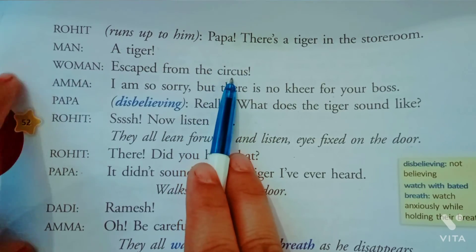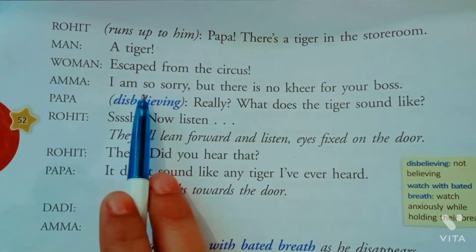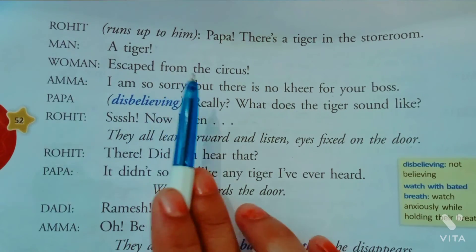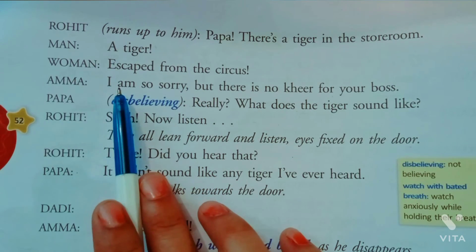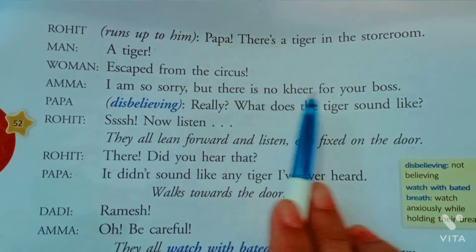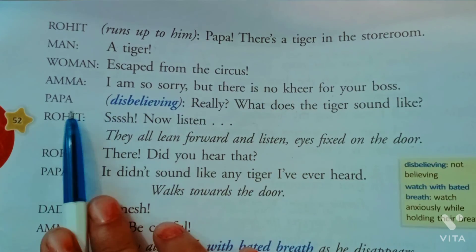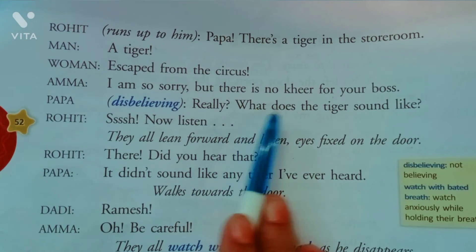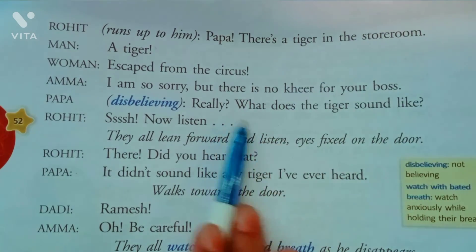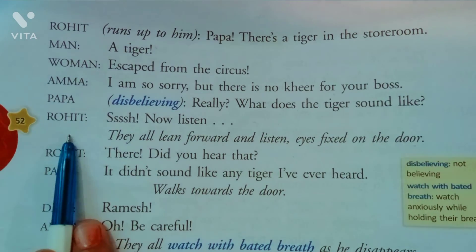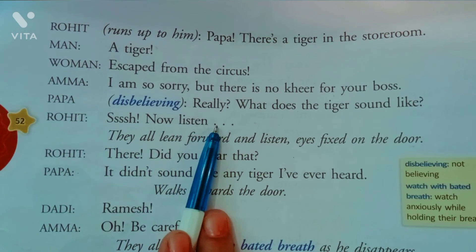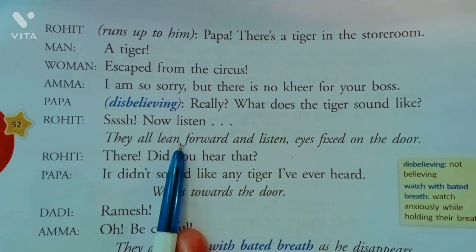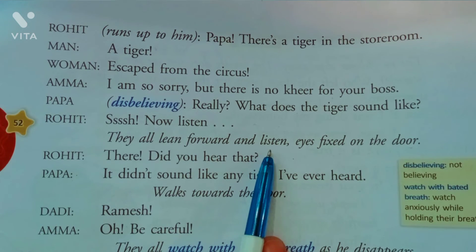Man bola 'A tiger!' Woman boli 'Escaped from the circus!' Amma apne husband Ramesh se boli 'I am so sorry, there is no kheer left for your boss.' Papa disbelieving — vishwaas nahi kar rahe the — 'Really? What does the tiger sound like?' Rohit bolta hai 'Quiet — listen.' They all lean forward and listen, eyes fixed on the door.